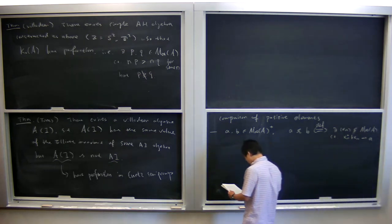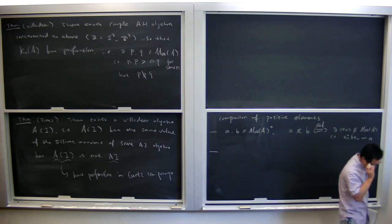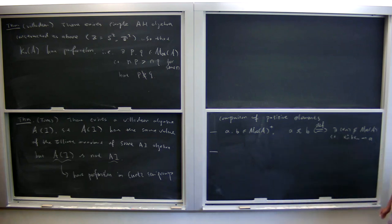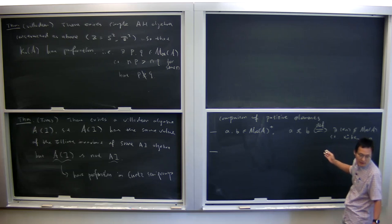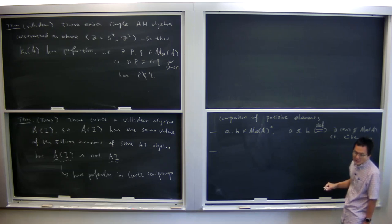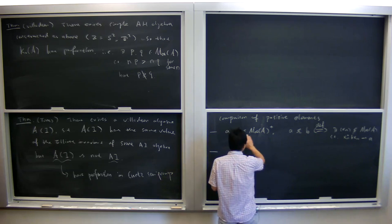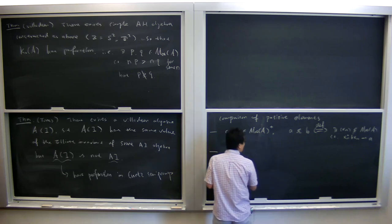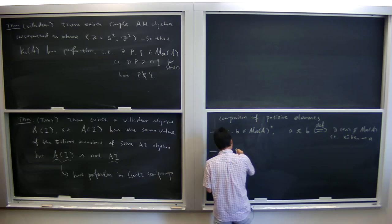We compare positive elements in the Cuntz sense. Just like in the projection case — comparison of positive elements reduces to Murray–von Neumann sub-equivalence for projections — but if we look at comparison for projections we also look at traces, like a rank. Here we want to do a similar thing: we look at the rank functions of positive elements.